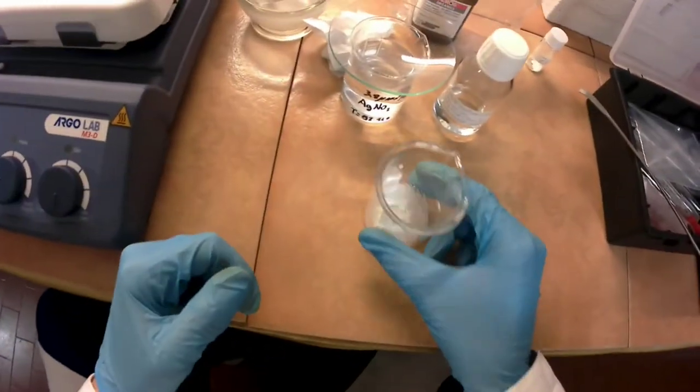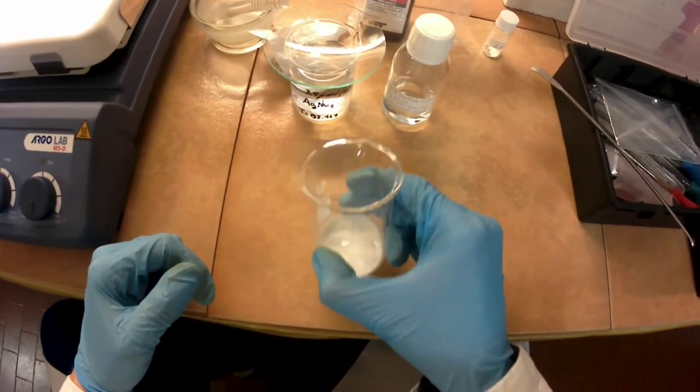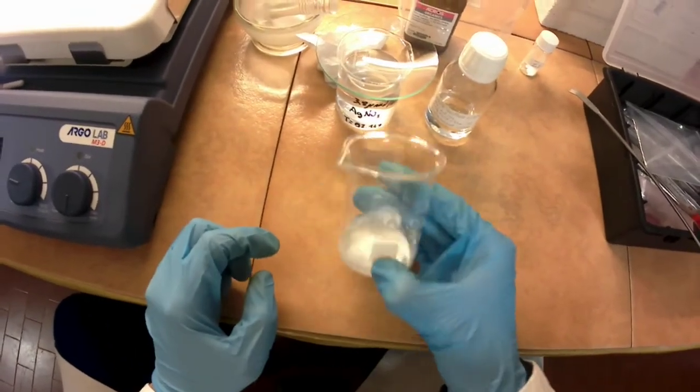First, weighing out the required tiny amount of silver nitrate is almost impossible, while it is possible to make a solution of heavy concentration through dilution.